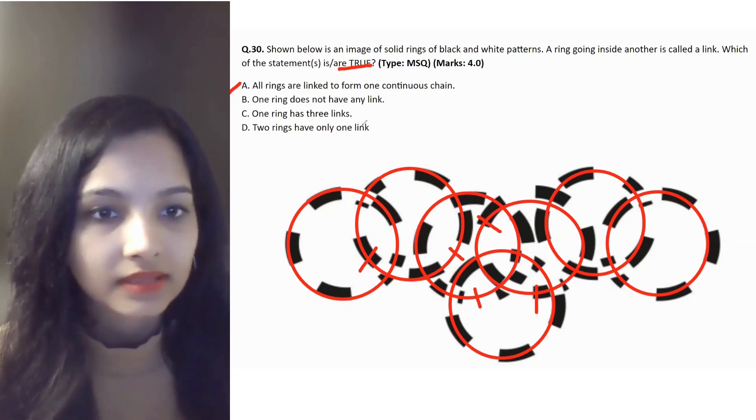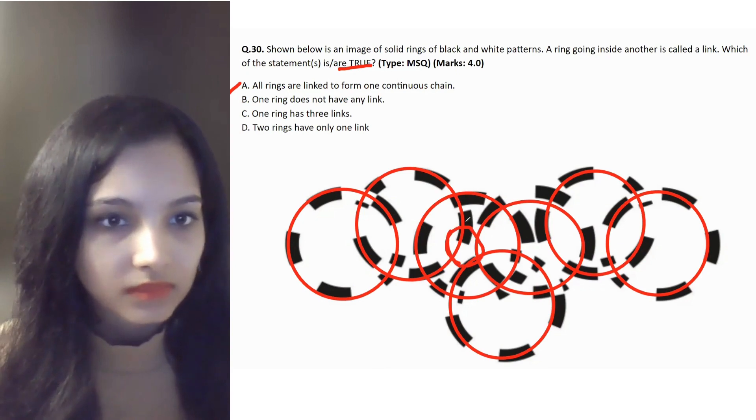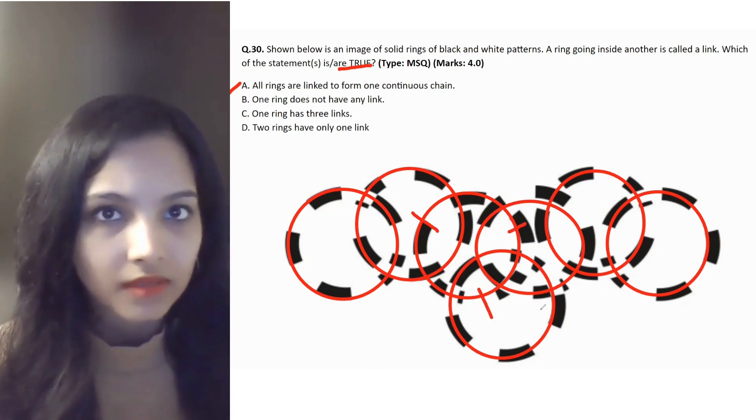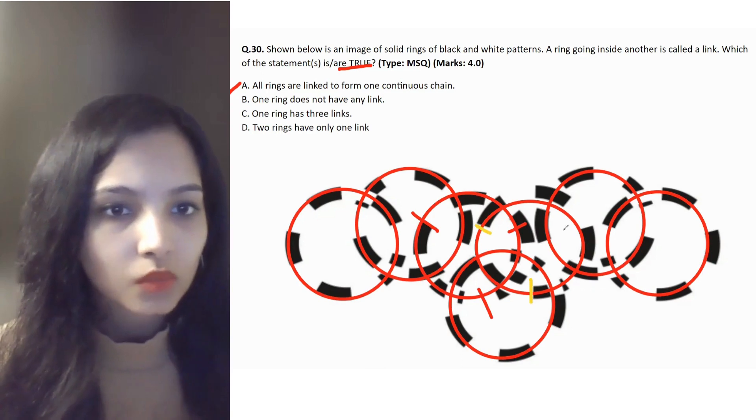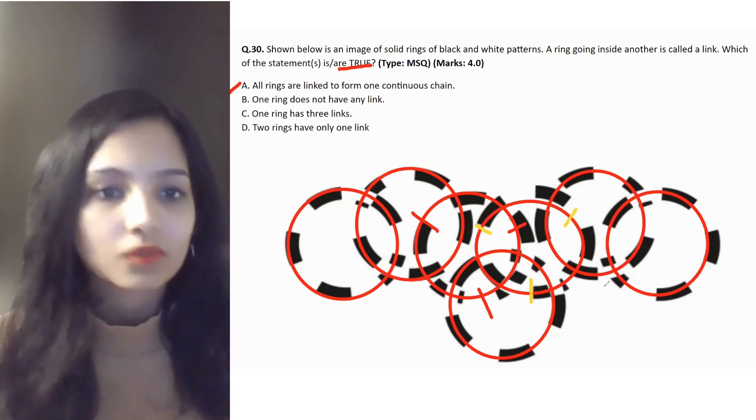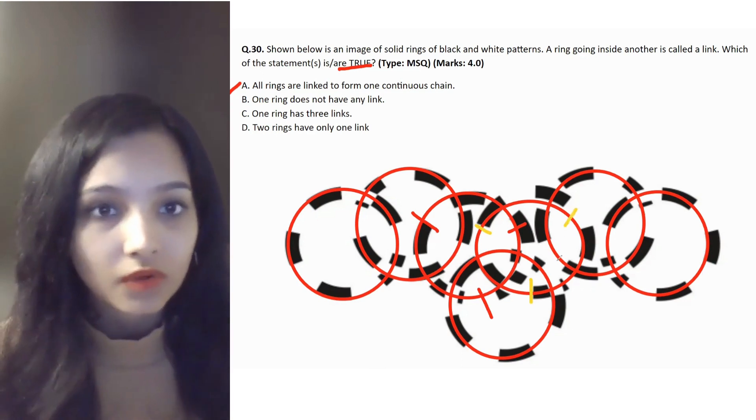Statement C: one ring has three links. So if you look at this ring, we have one, two, and three, right? Yes, but then even this ring has three links. So there's this one, two, and three. So C is also not true.